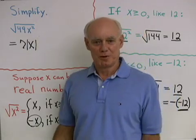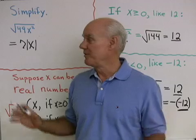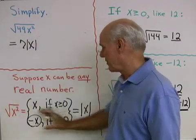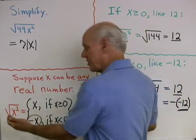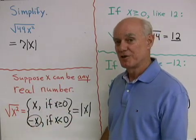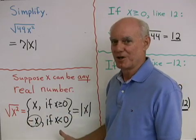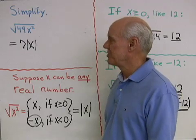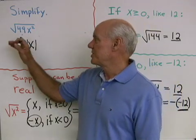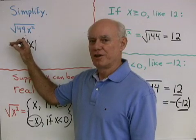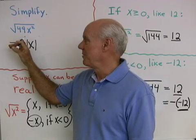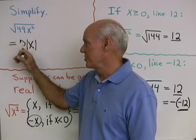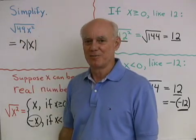A lot of times when people are taking their first class in algebra, we just say: anytime there's a square root and you have a variable underneath, just assume it's a positive number — that way we don't have to worry about any of this. This can be a little confusing the first time you see it, so if you are confused, that's okay — that's part of the process, and it will get better the farther you go in algebra. But if you're in an elementary algebra class and the book says assume all variables under a square root are positive, then you don't need the absolute value. The square root of 49x² would just be 7x, as long as x is a positive number.